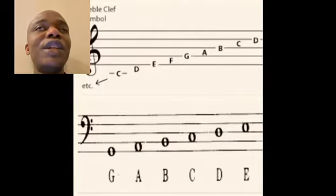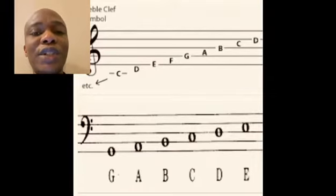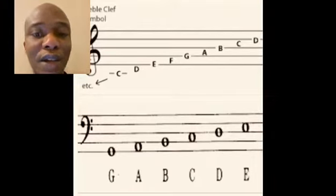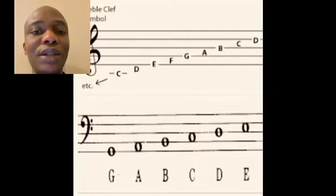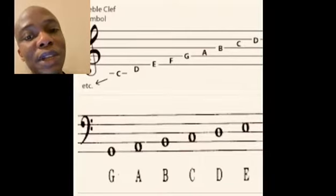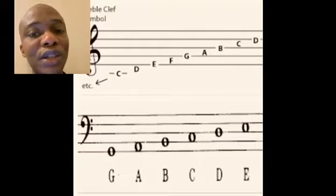Music is a language, a language that has seven alphabets: A, B, C, D, E, F, G. I'll be using those alphabets to guide us through this lesson.